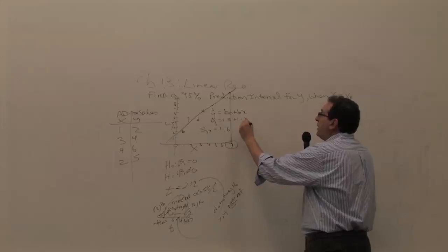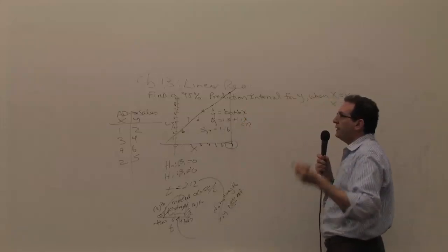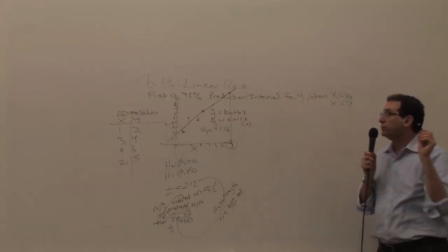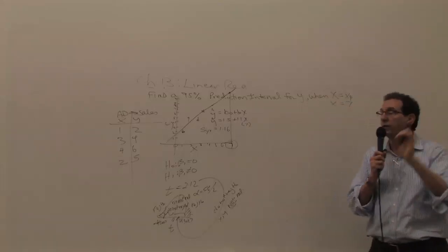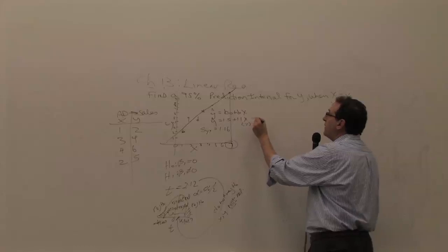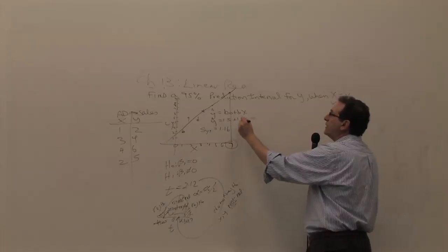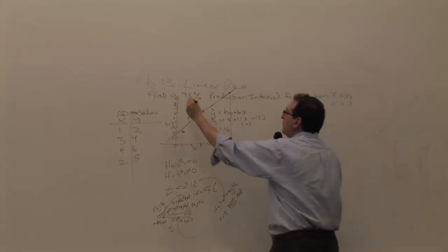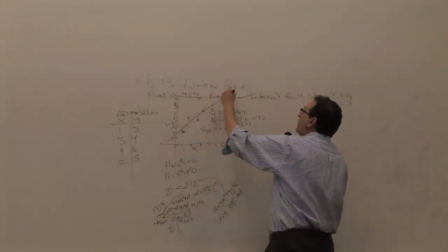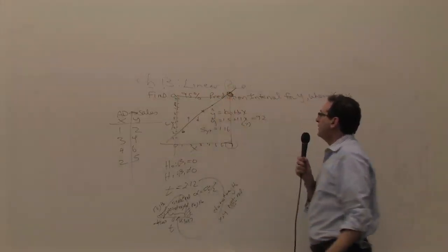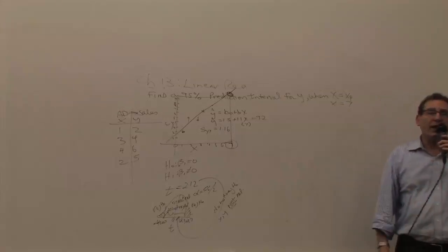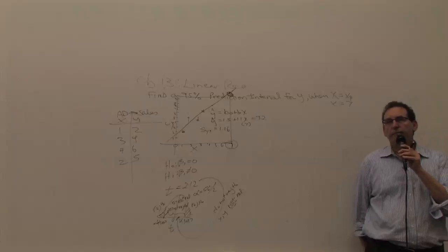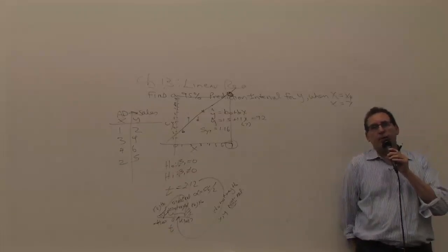So of course, the way you calculate this is by plugging this into the formula as we did at the very beginning of the chapter. You plug in a 7 because that's the number we're trying to make a forecast for specifically, which is why it's called a prediction interval. And if you do plug in 7, 7 times 1.1 is 7.7 plus 1.5 is 9.2. So when x equals 7, we expect the y value to be at 9.2, something like that. Well, that's how we did it at the beginning of the chapter. But now that we learned the entire chapter, what can we do beyond that?